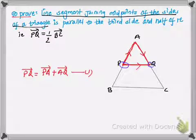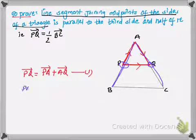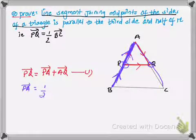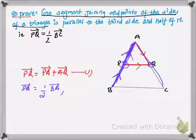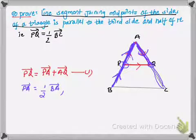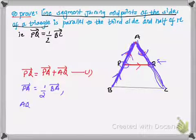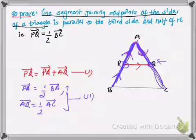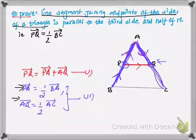Since P and Q are midpoints of sides AB and AC respectively, I can write vector PA as half of vector BA — we have to consider direction, so PA equals one half of vector BA. Similarly, vector AQ equals one half of vector AC, since Q is the midpoint of side AC. So vector AQ equals half of vector AC. Let these be our second equation.